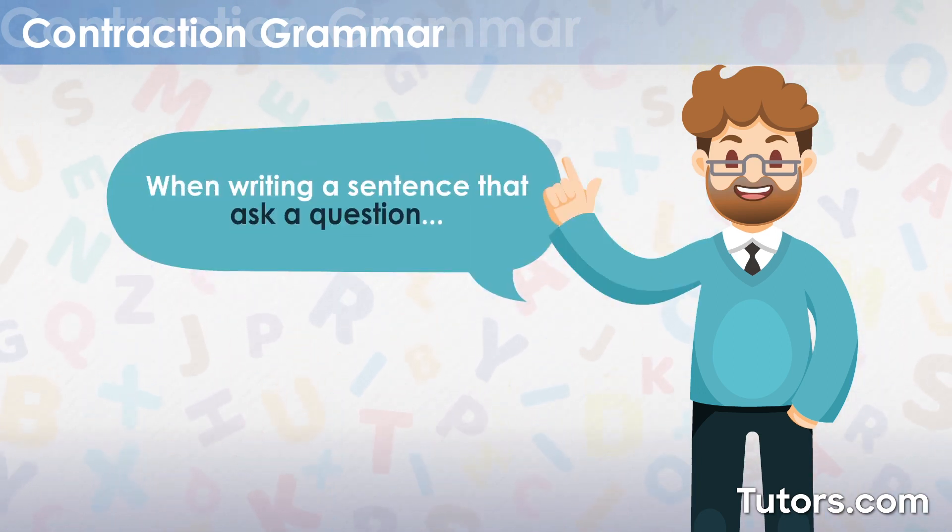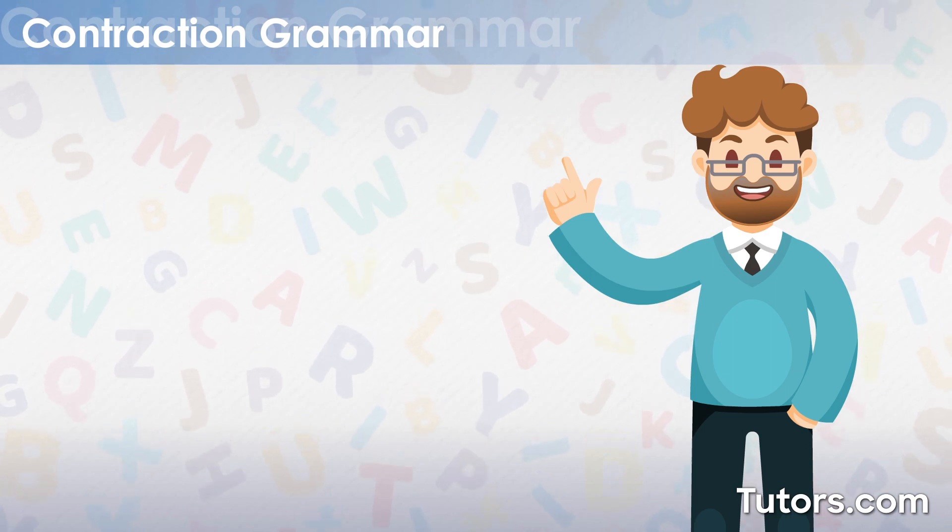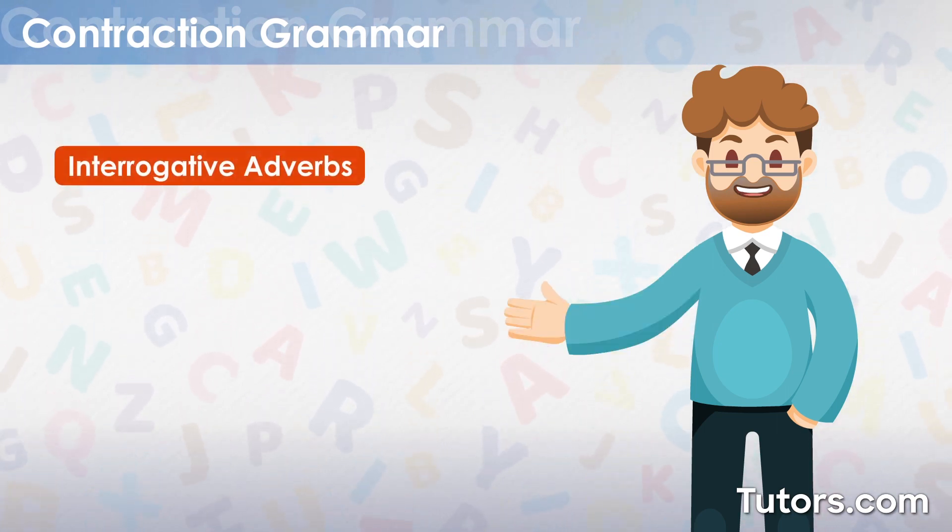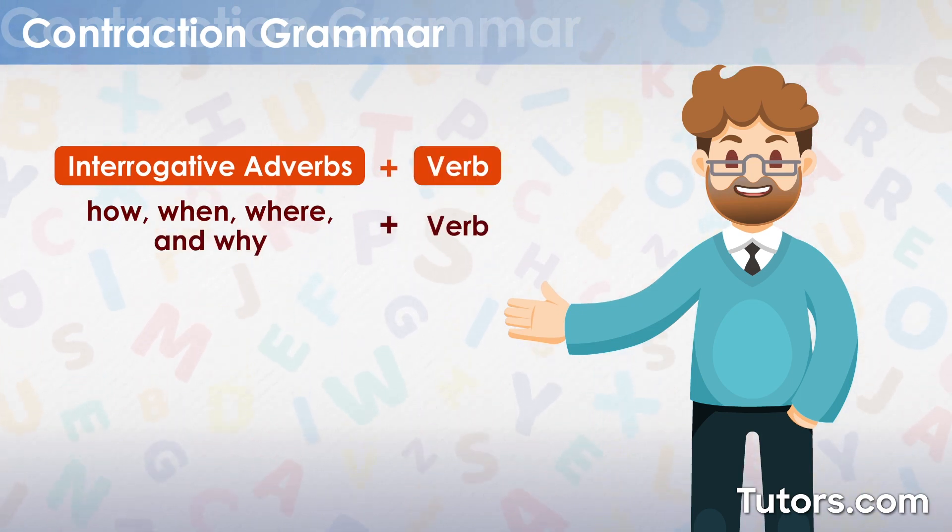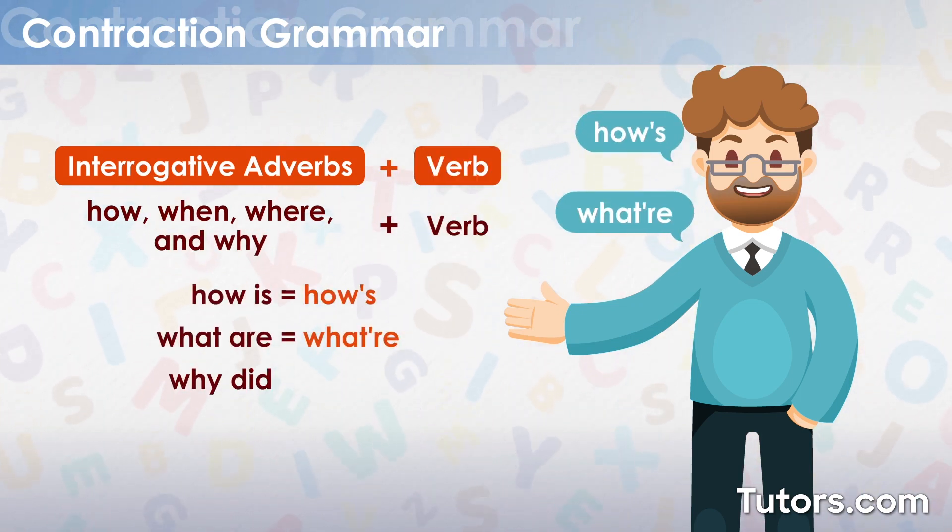When writing a sentence that asks a question, contractions are used by combining an interrogative word like how, when, where, and why with a verb. Why did is shortened to why'd, for example.